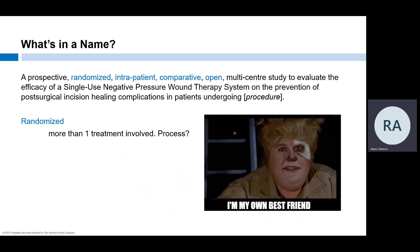Randomized: more than one treatment is going to be tested, and we need to be on the lookout for the process that will be used. Intra-patient comparative means each patient is going to serve as their own control. The patients have to be undergoing a certain kind of surgical procedure that must involve at least two different identical sites. One incision must have the investigational device and the other a control, most likely the current standard of care.